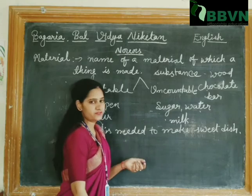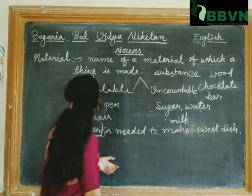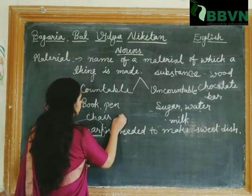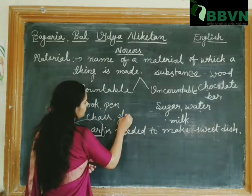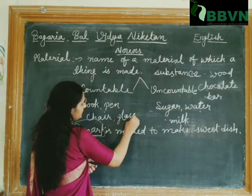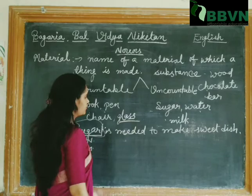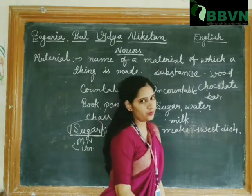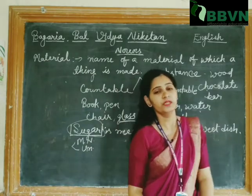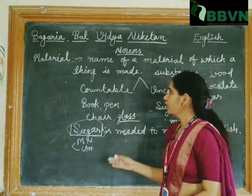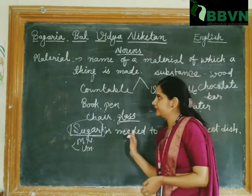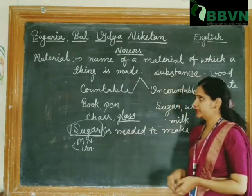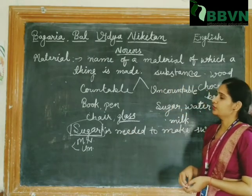Why is sugar uncountable? Because we can weigh sugar, but we cannot count it as one, two, three, four, five, six. However, we can say one glass, two glasses, three glasses — so glass becomes the countable unit. So this was our material noun.